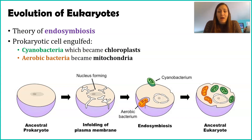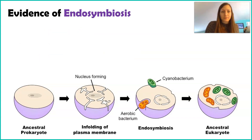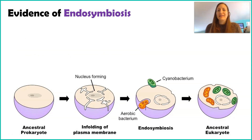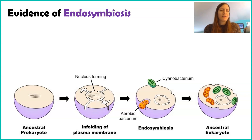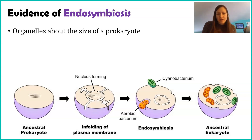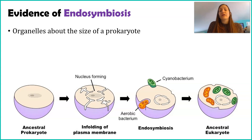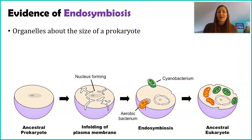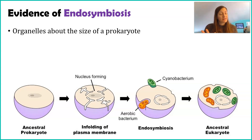We're not going to be able to tell offhand if this is what really happened, and we can't stimulate this in the lab, at least not yet. So let's talk about the evidence. The first piece of evidence is not a strong piece of evidence, but a piece of evidence nonetheless: the organelles, the chloroplasts and the mitochondria, are about the size of a prokaryote. Prokaryotes are much smaller than eukaryotes, so again, not a strong piece of evidence, but worth noting.